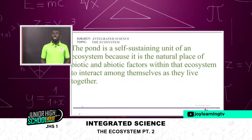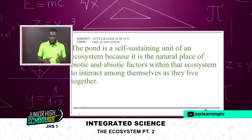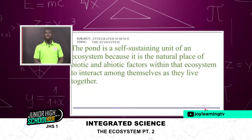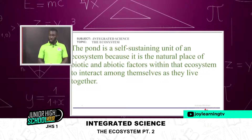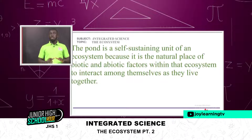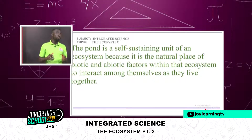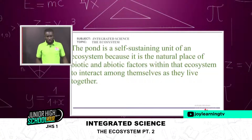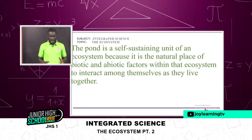Why is a pond a self-sustaining unit of an ecosystem? A pond is considered a self-sustaining unit of an ecosystem because it is a natural place for biotic and abiotic factors within that ecosystem to interact among themselves so that they can all live together.